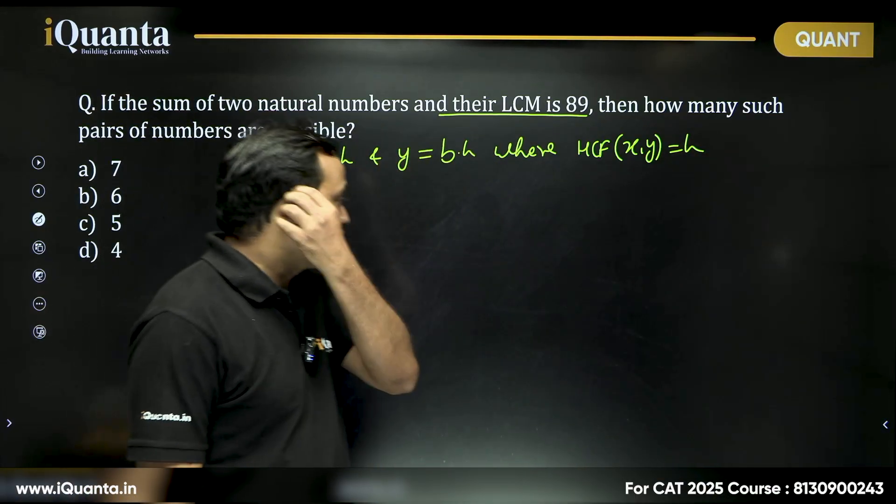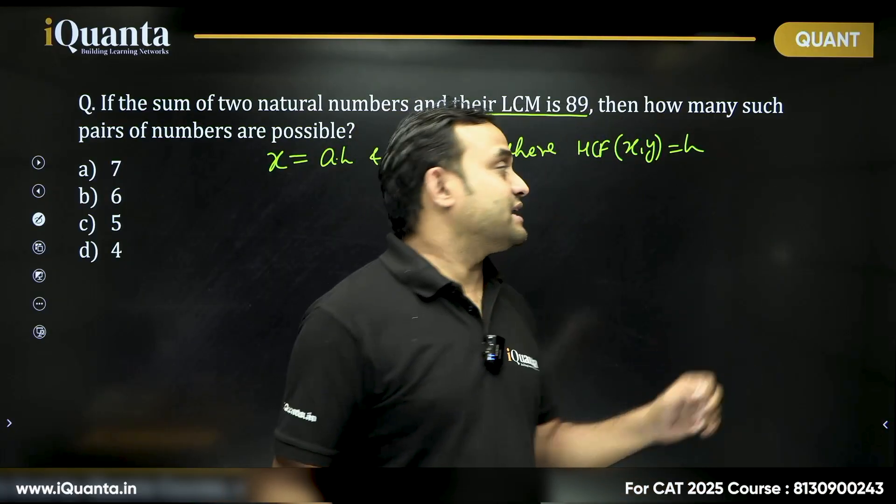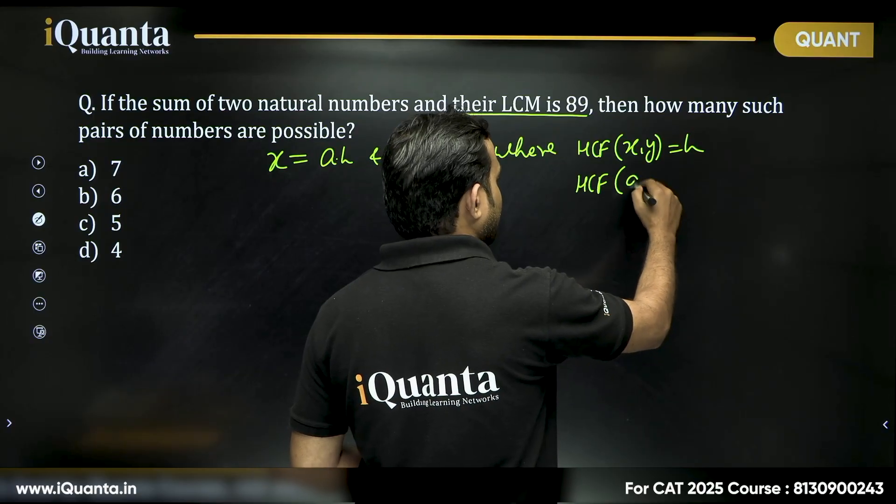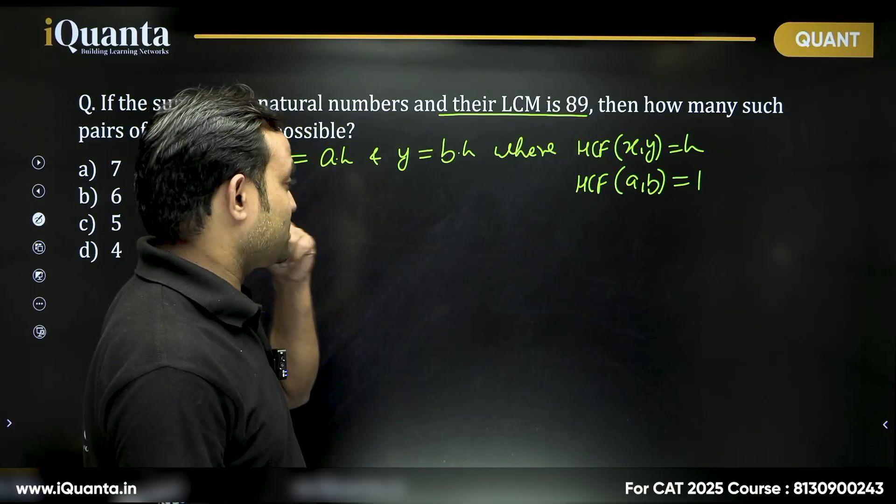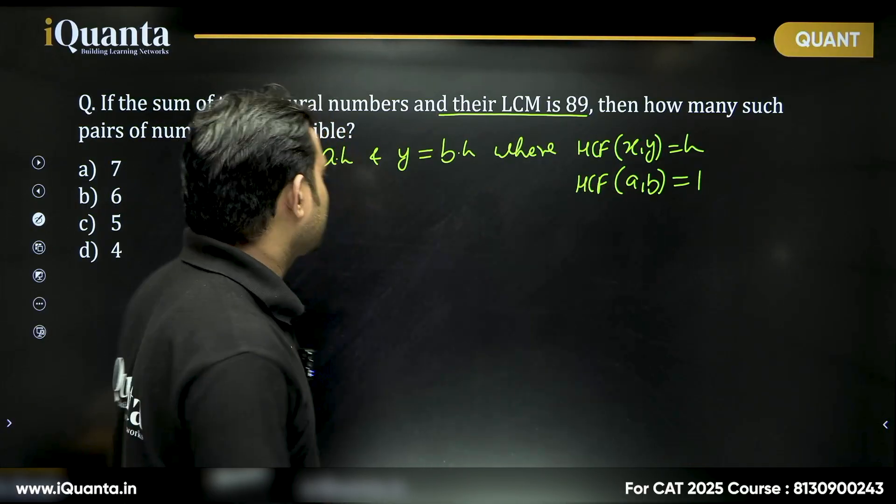Can I say HCF of A and B will also be equal to 1, meaning A and B are coprime to each other? A and B are coprime to each other.